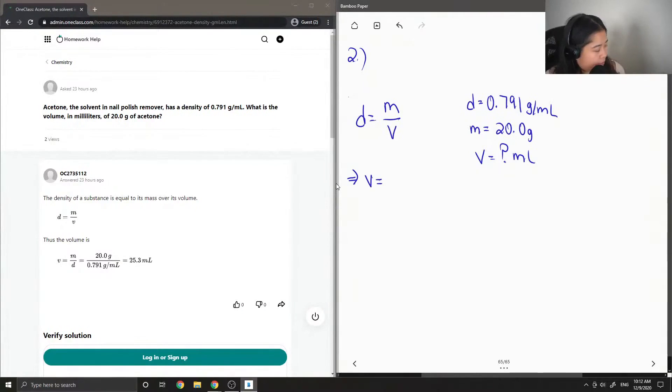So volume is then equal to mass divided by density. So now let's substitute in 20 grams divided by 0.791 grams per milliliter.